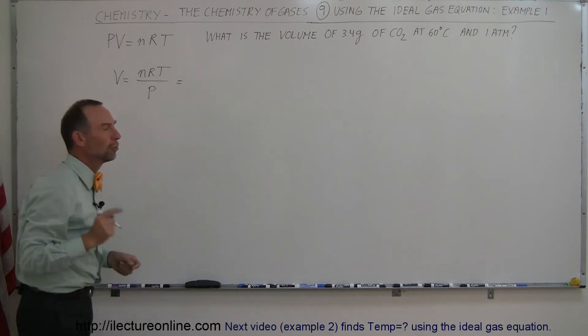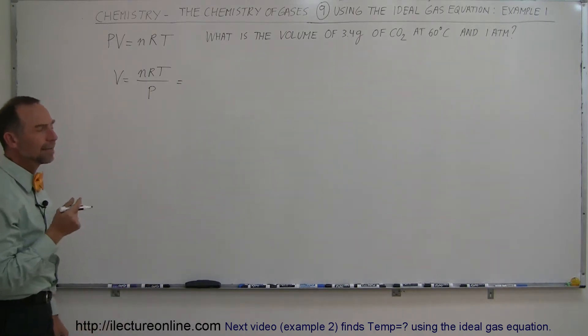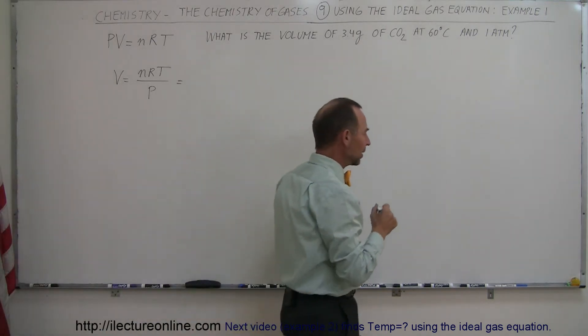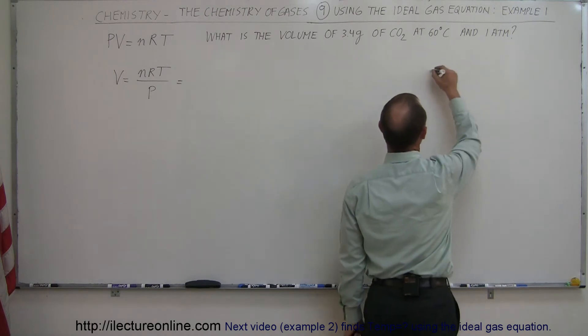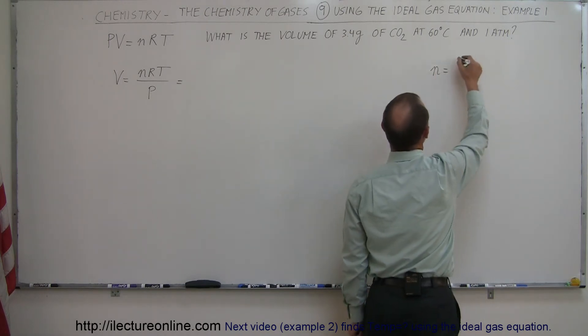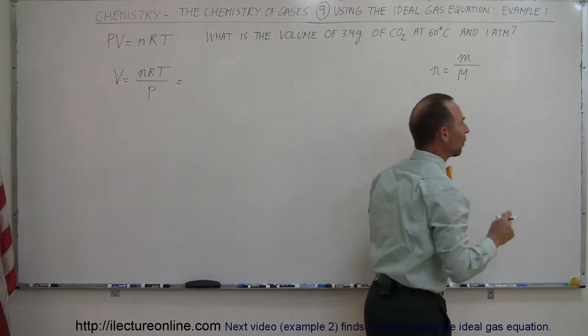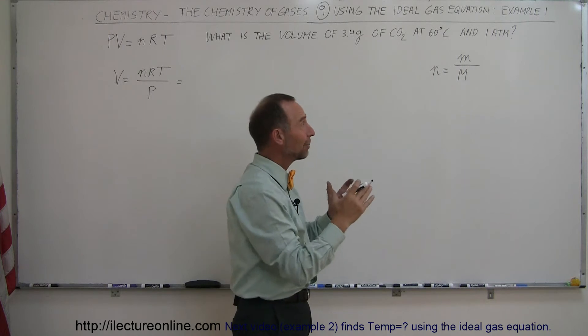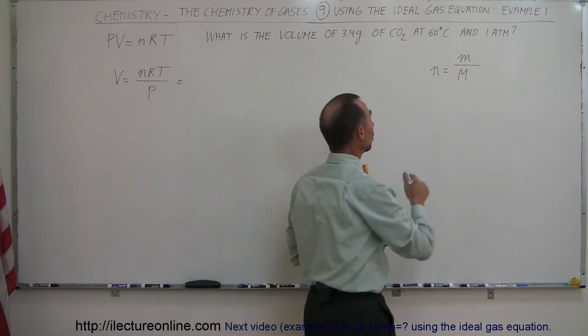So this is equal to number of moles. Well they didn't give us the number of moles, they gave us the amount of gas in grams. So now we can think of how to convert that and the number of moles by definition is equal to the mass of the sample divided by the molar mass. So m, small m, stands for the mass of the sample, big M stands for the molar mass, the mass per mole.